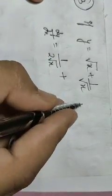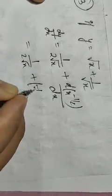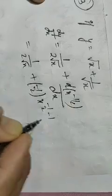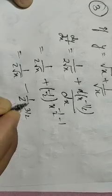Third question: if y = √x + 1/√x, then find dy/dx. So dy/dx: the differentiation of √x is 1/(2√x), and the differentiation of 1/√x = x^(−1/2) is (−1/2)·x^(−3/2) using the power rule. The final answer follows directly.